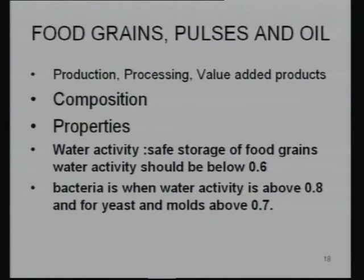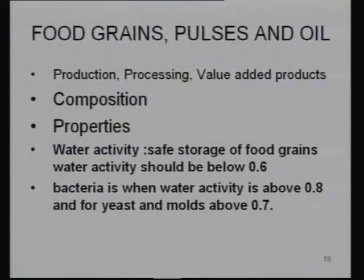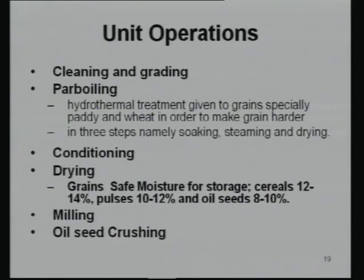Water activity plays an important role in food grain storage. Water activity should be less than 0.6 for good storage life, since bacteria grow above 0.8 and yeast and mold grow at water activity 0.7. Moisture levels to maintain: 12–14% for cereals, 10–12% for pulses, and 8–10% for oil seeds. Key unit operations include cleaning, grading, parboiling of rice, conditioning, drying, milling, and oil seed crushing.